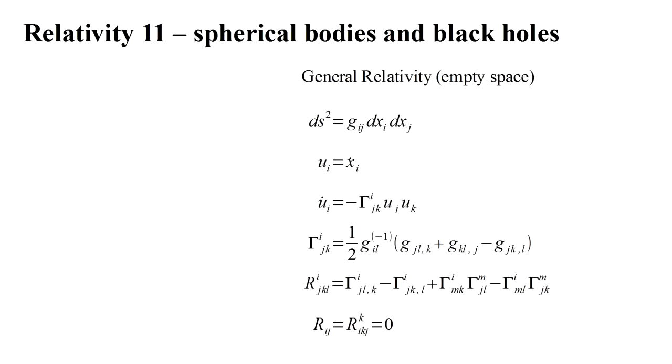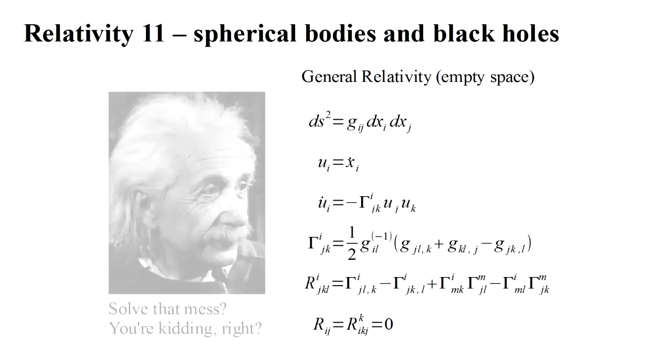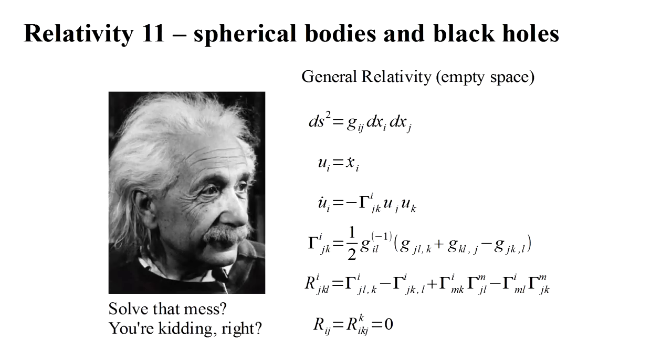We've seen that Einstein's theory is pretty complicated mathematically. In fact, he originally doubted it would be possible to find exact solutions, and he expected the theory would only be applicable using approximations.